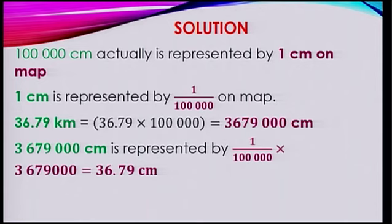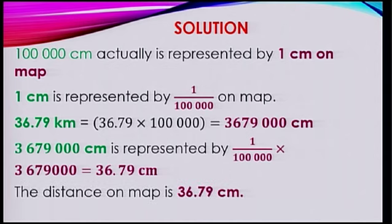So 1 over 100,000 multiplied by 3,679,000, you will get 36.79 cm. So we can say that the distance between SSR Botanical Garden and the Naval Museum is 36.79 cm.